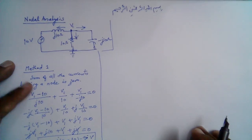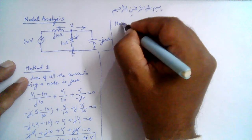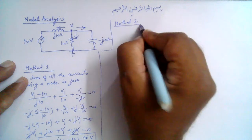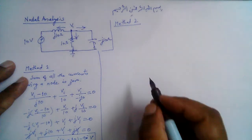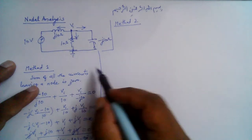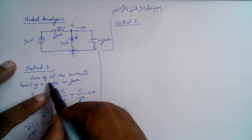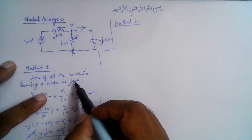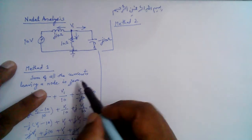Method 2 uses a different form of Kirchhoff's current law. Rather than summing currents leaving the node, we use the alternate statement: the sum of all currents entering a node is zero.